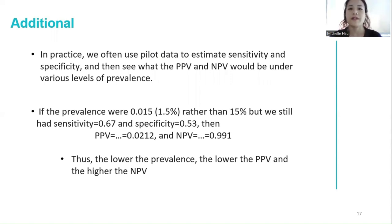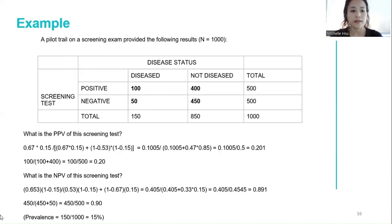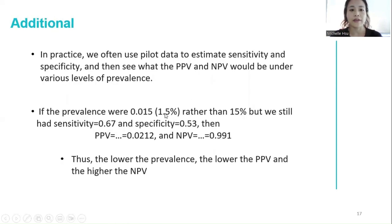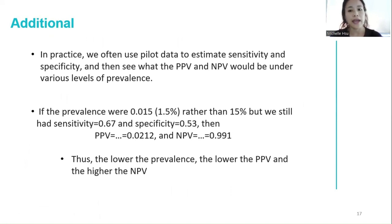In practice, however, we often use pilot data to estimate sensitivity and specificity and then see what the PPV and NPV would be under various levels of prevalence estimated from other studies. If the prevalence were 1.5% — much lower than 15% — but we still had the same sensitivity and specificity, then the PPV would decrease significantly to 0.02, and the NPV would increase significantly to 0.99. The lower the prevalence, the lower the PPV and the higher the NPV.